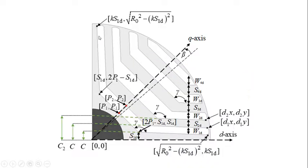This figure shows the four flux barrier hyperbolic rotor structure developed based on coordinates. First and foremost, we should get familiarized with the rotor design variables.